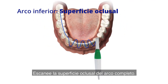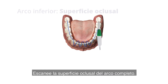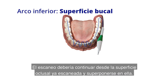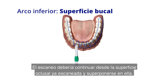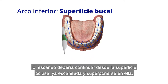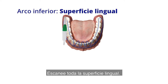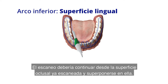Scan the occlusal of the entire arch. Scan all of the buccal — the scan should continue from the occlusal surface already scanned and overlap with it. Then scan all of the lingual, continuing from the occlusal surface already scanned and overlapping with it.